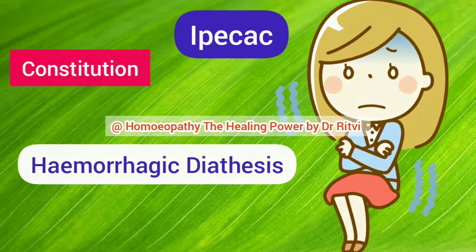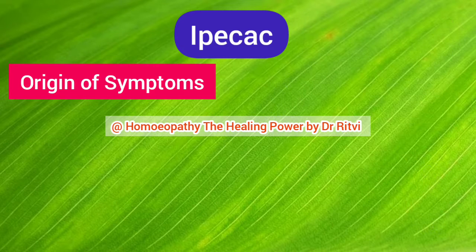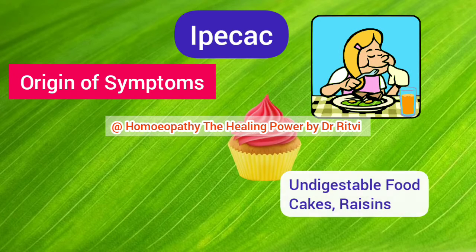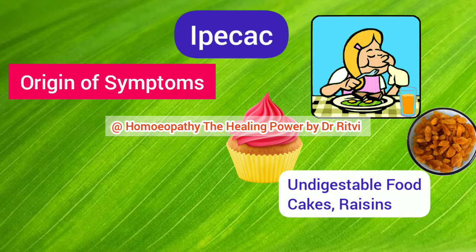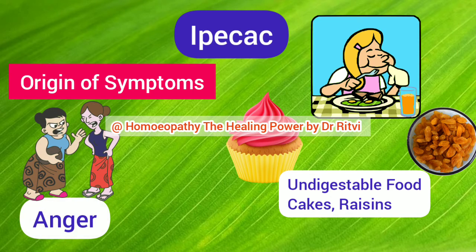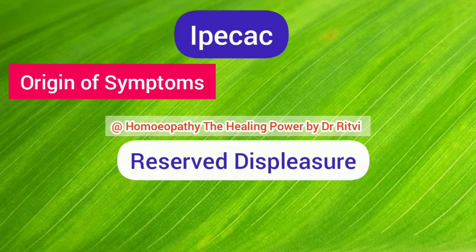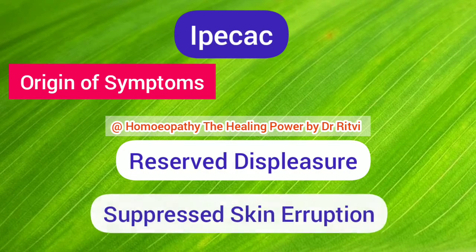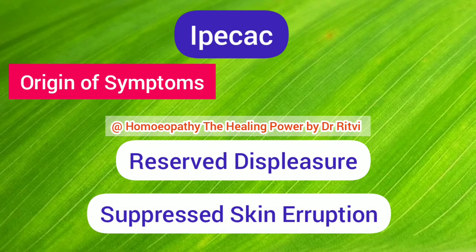Symptoms in Ipecac are produced by consuming indigestible food or rich foods like raisins and cakes, or due to anger. Symptoms are also produced due to reserved displeasure, injuries, or because of suppressed eruptions.